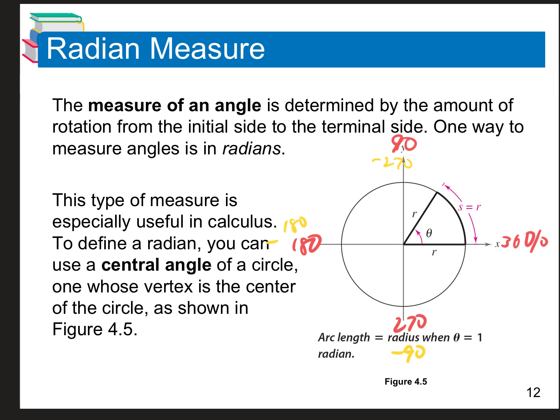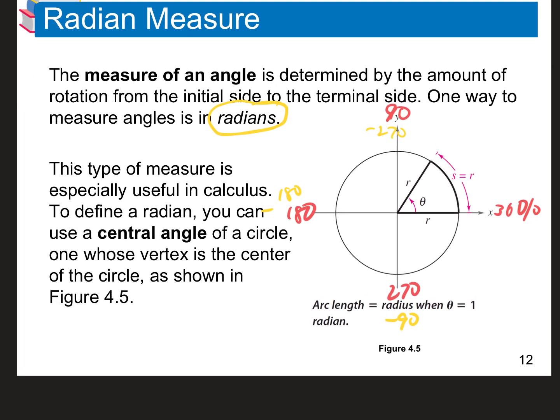We're going to start talking in terms of radians. This is what our unit circle is based on. Radians are based on a ratio — it's the ratio between the radius from the central angle to the outside of the circle and what's called the arc length. That's where the whole unit circle comes from. Some of you might have had to memorize it in Algebra 2 — pi over 3, pi over 4, pi over 6 — we're going to talk about all of that.